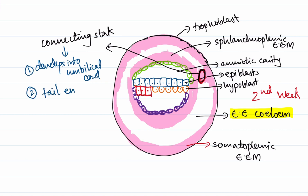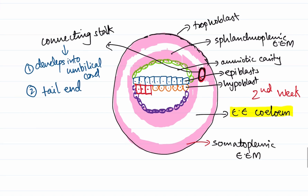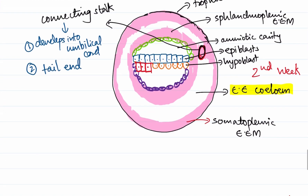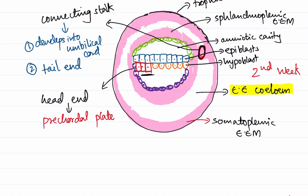The connecting stalk also establishes the cephalocaudal axis of the embryo — it represents the tail end. Opposite the connecting stalk, the hypoblastic cells become cuboidal and form the head end. This structure formed by the hypoblast at the head end is called the prechordal plate. So prechordal plate formation occurs by the end of the second week.